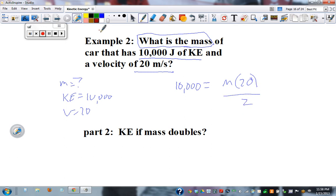And now we have some algebra steps to do here. So the first thing is move the denominator. So we have 20,000 equals mass times 20 squared. 20,000 equals mass times 400. And now we need to solve for mass. So divide by 400 on both sides.